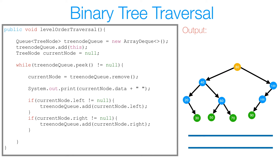To traverse level by level, we're going to use a queue to hold references as we go down the tree. For example, if 80 is in our queue, we'll dequeue 80, print its value, and then add its left and right child to the queue. Then as we dequeue 40 and 120, we'll add their children to the queue, and so on — ultimately traversing level by level. As we step through the code, this will become very clear.